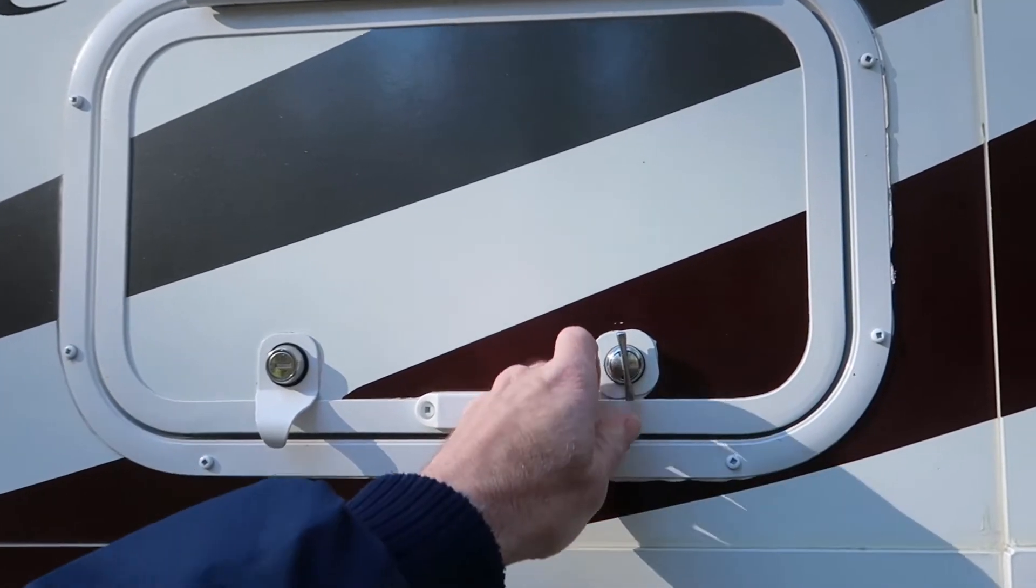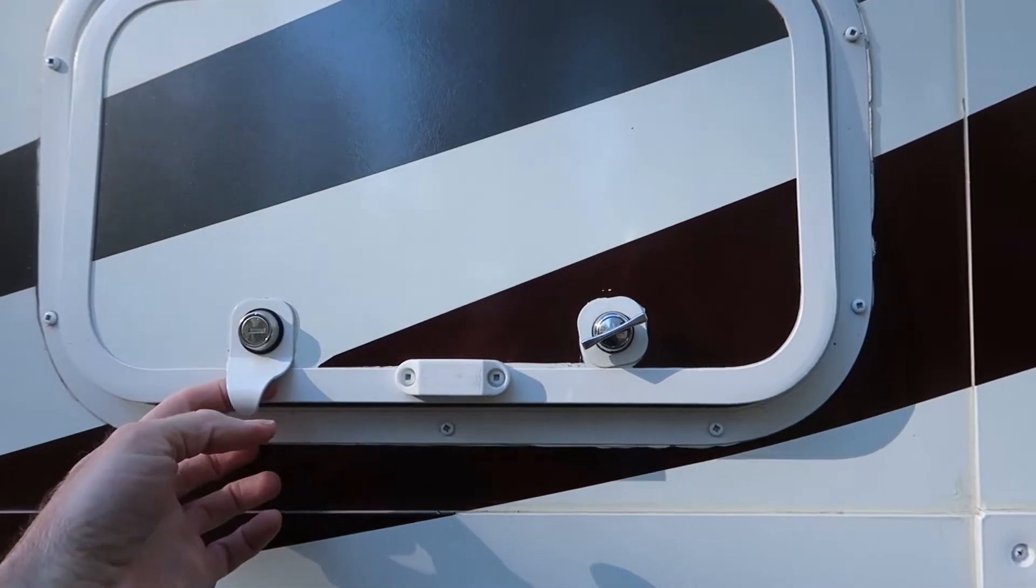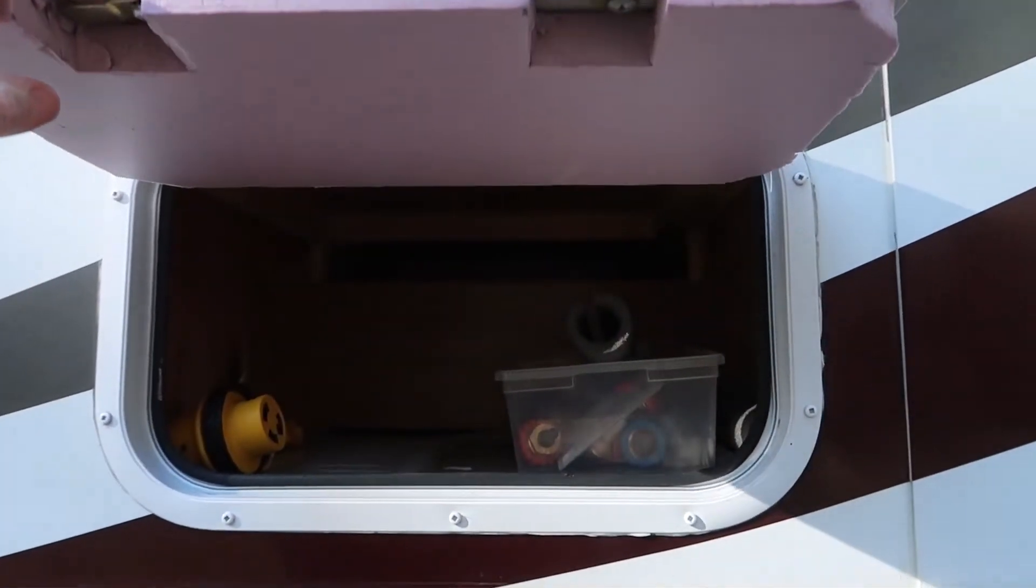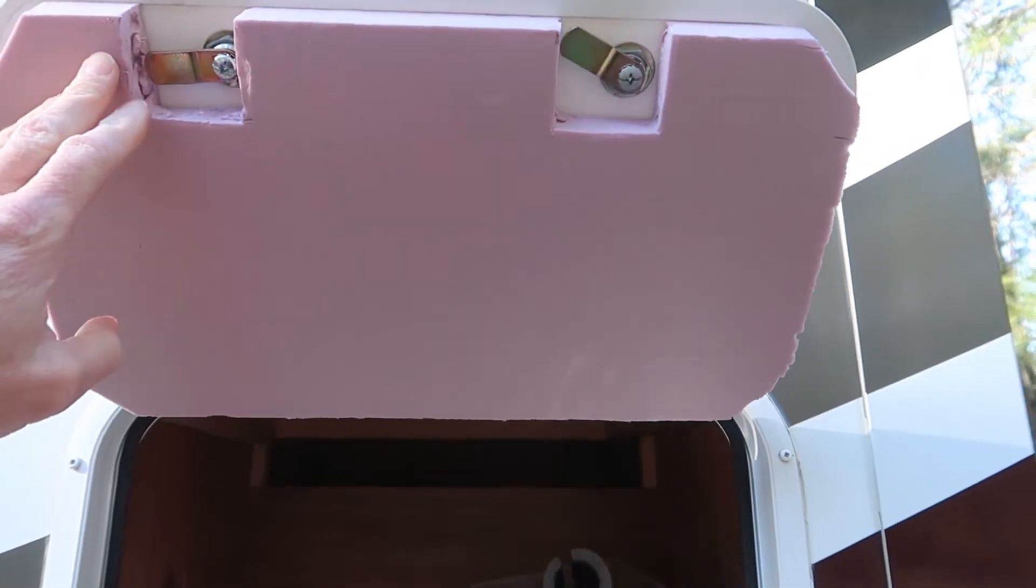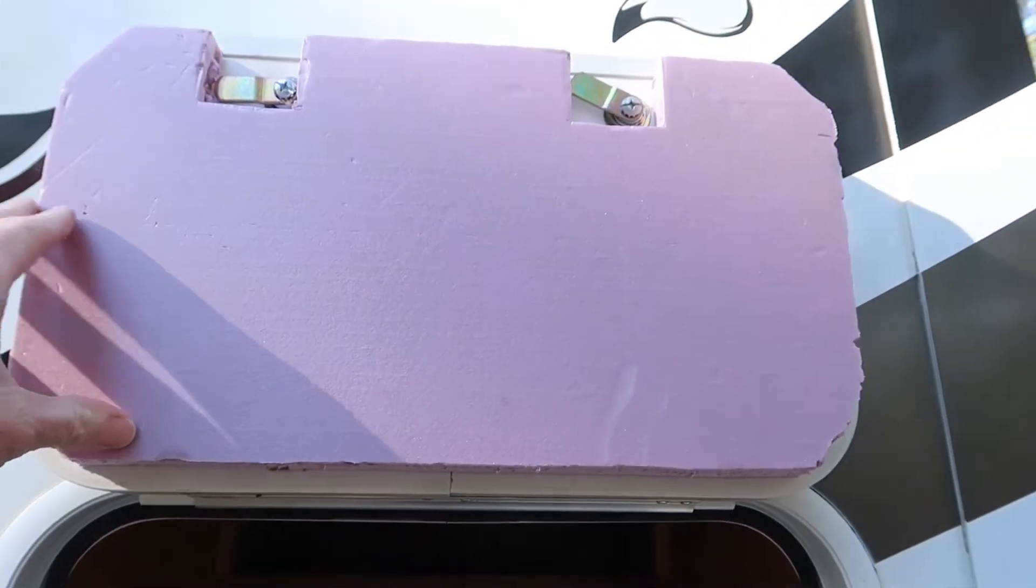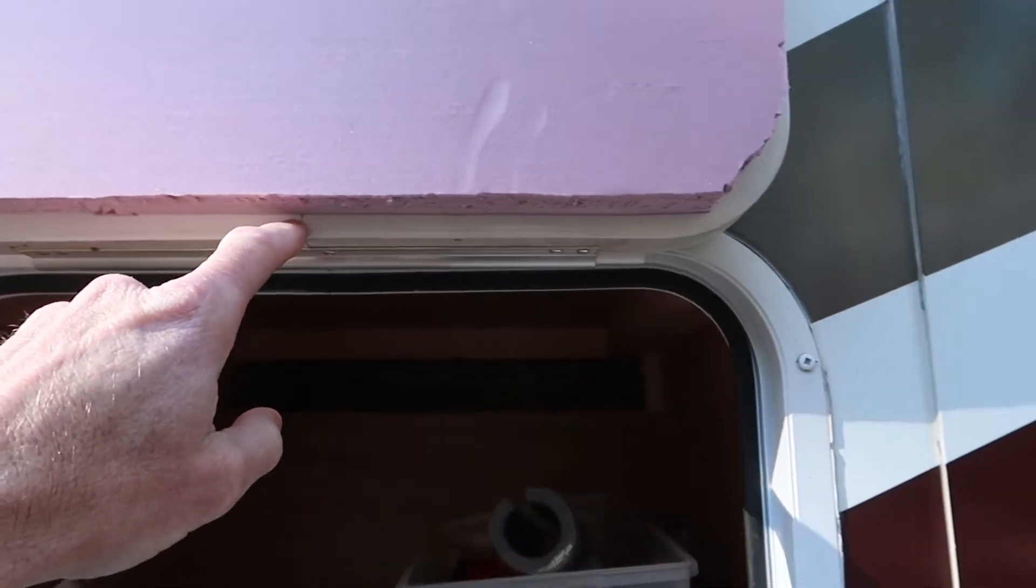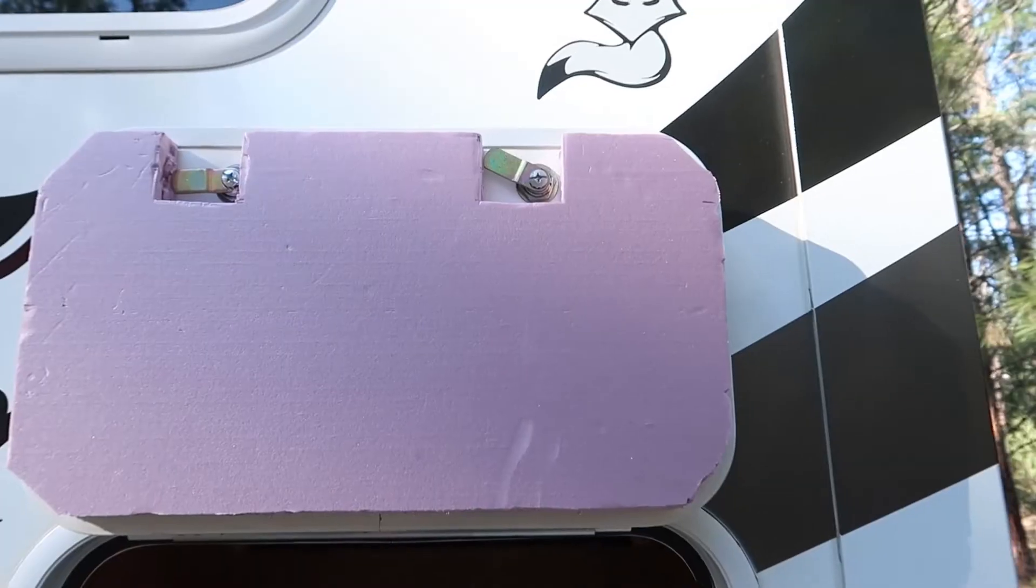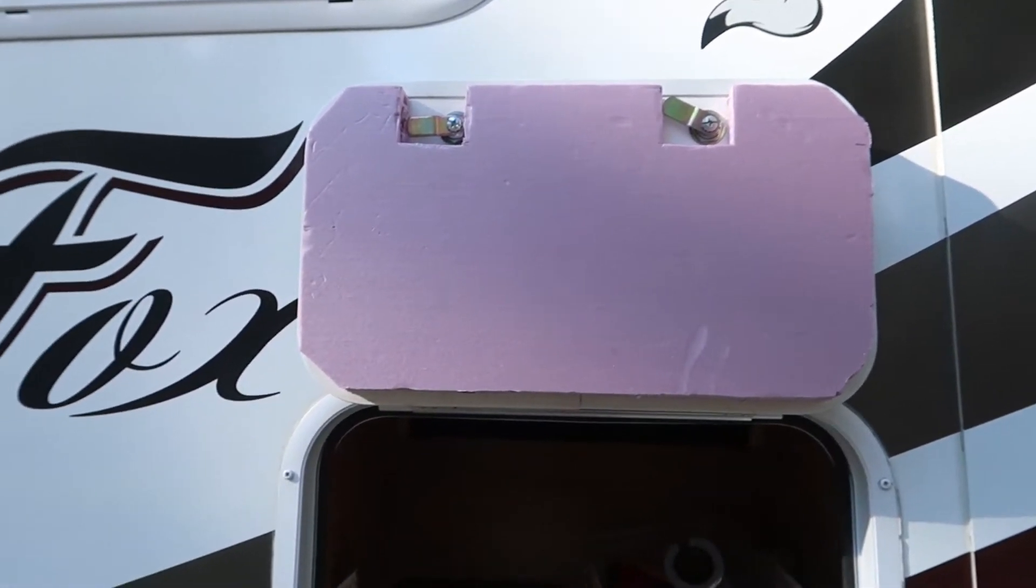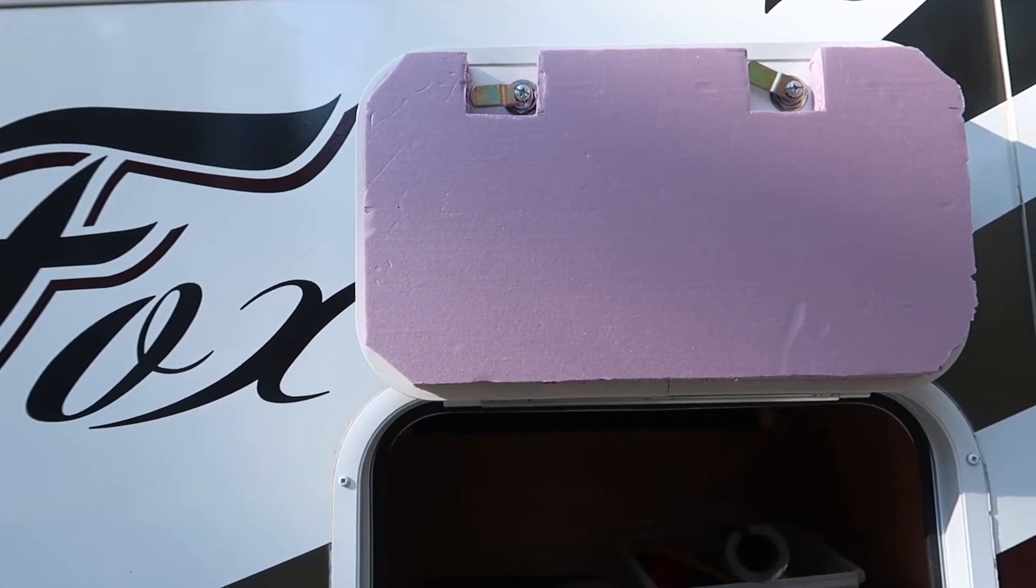Something else I did to this compartment door is I first made a cardboard cutout template, and then I made that piece of cardboard fit around the perimeter of the frame. Then I cut out this piece of pink foam board to match the size of my cardboard template, and I notched out where each of the latches are.